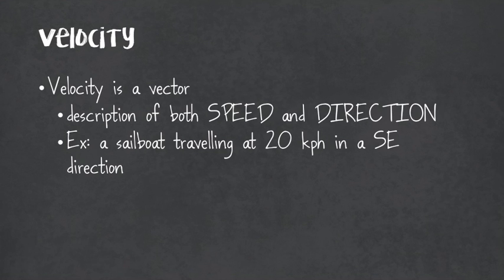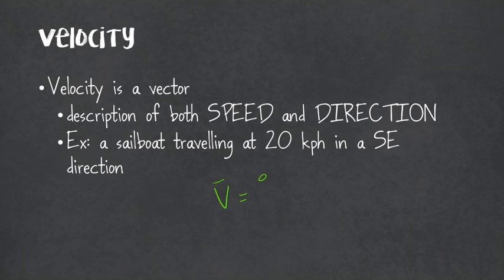So let's talk about velocity. Velocity is the vector counterpart of speed — it is very similar, but in addition to describing the speed of our object, it also gives us a direction. For example, a sailboat traveling at 20 kilometers per hour in a southeast direction — that is velocity. We calculate it much the same way: velocity equals distance over time, but we need to include our direction information in that measurement.